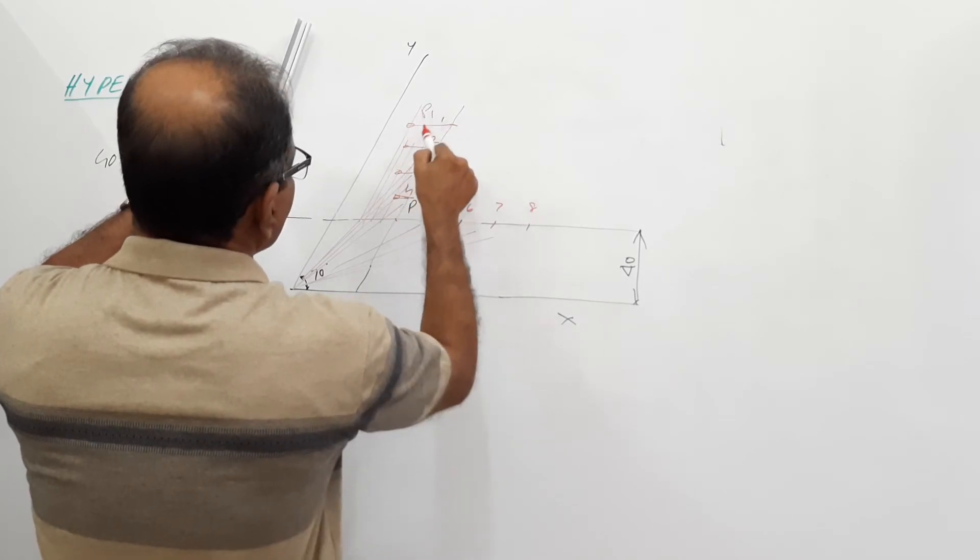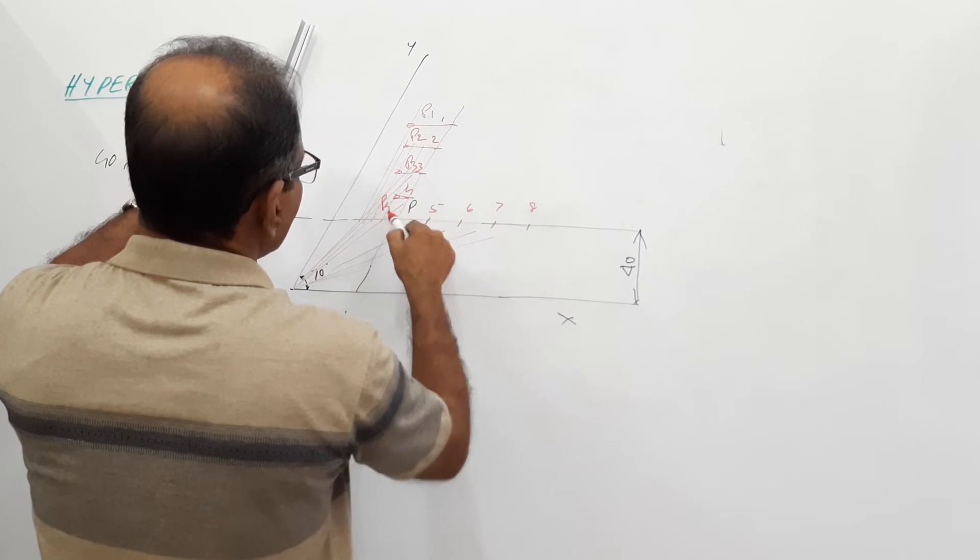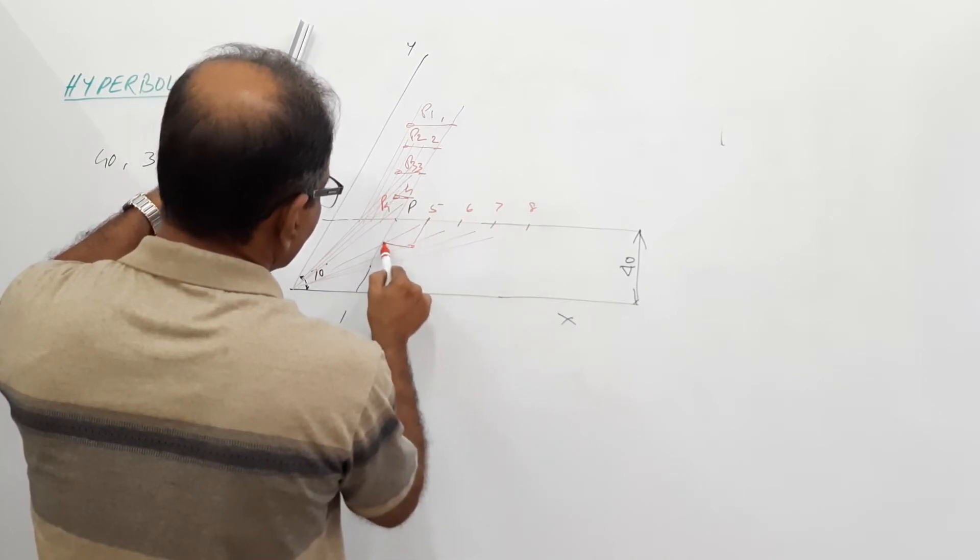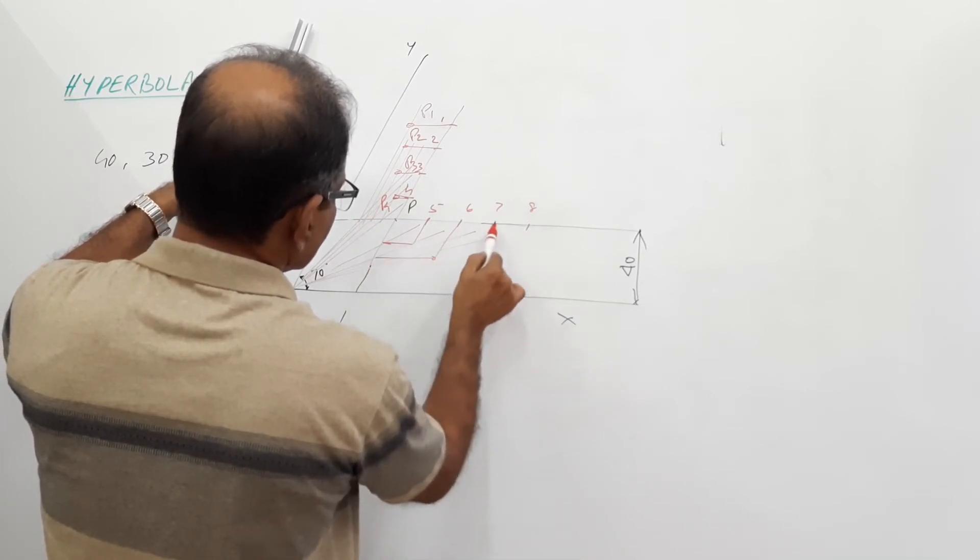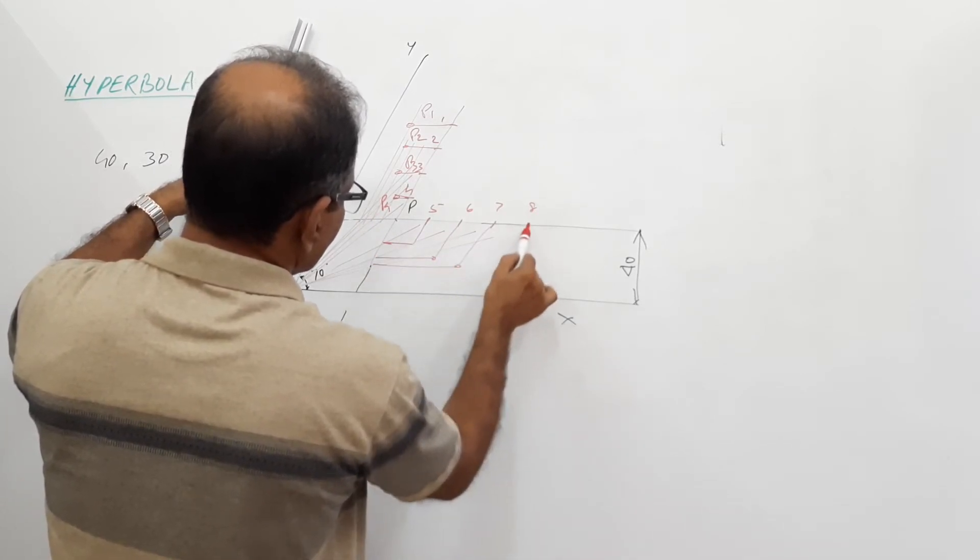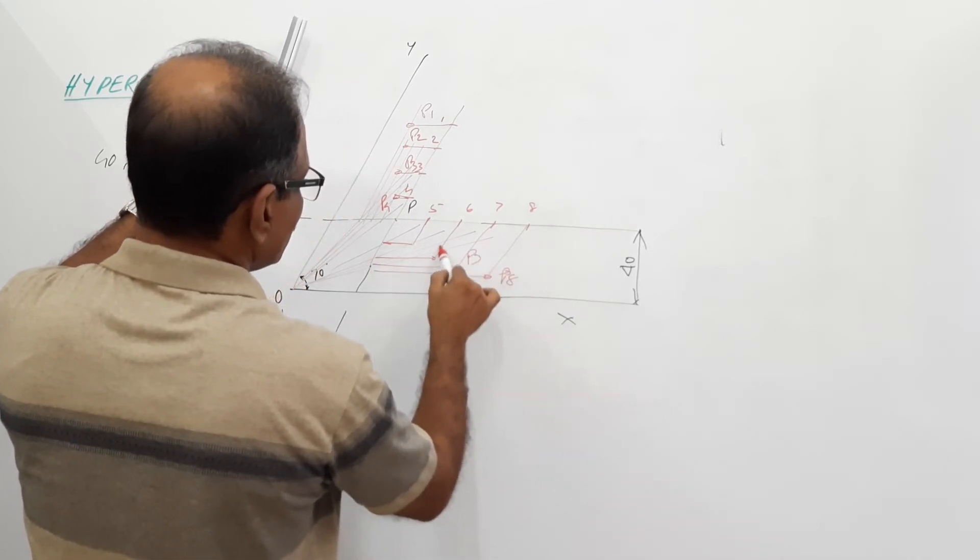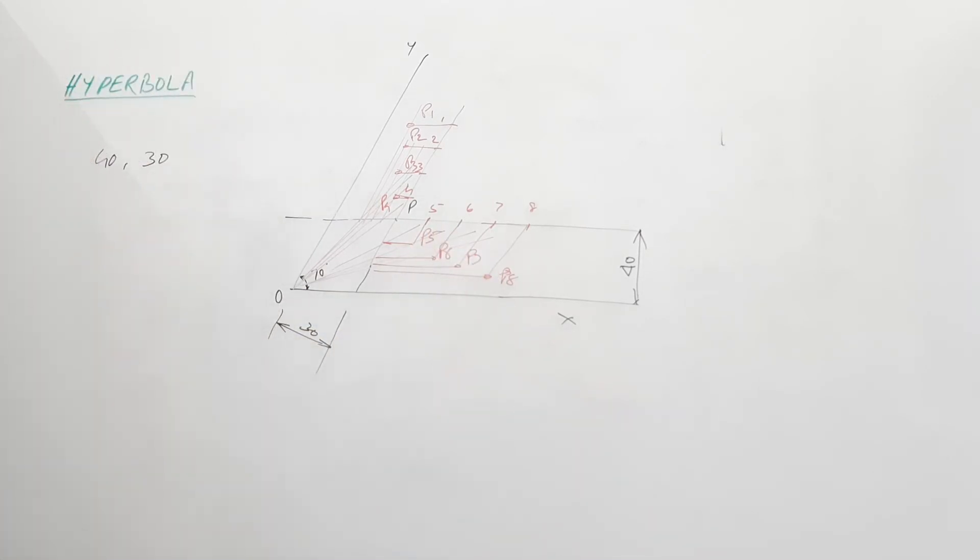P1, P2, P3, P4, P5, P6, P7, P8, P8, P7, P6, P5. Agreed. Connect them by a smooth curve.